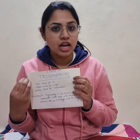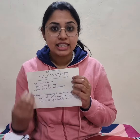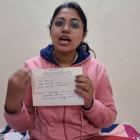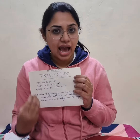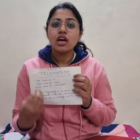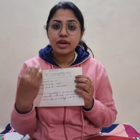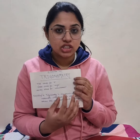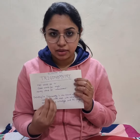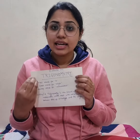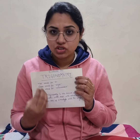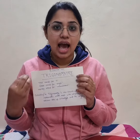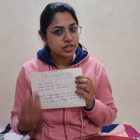So trigonometry is basically a branch of mathematics that deals with the measurement of sides of a triangle and its three angles. You can define it by the very definition that trigonometry is a branch of mathematics that deals with the measurement of three sides of a triangle and the three angles of it respectively.